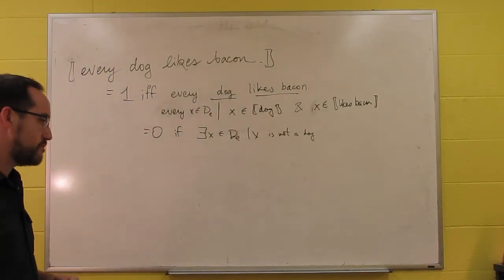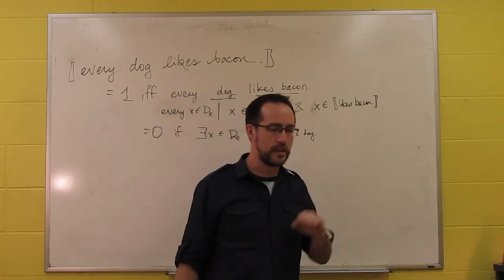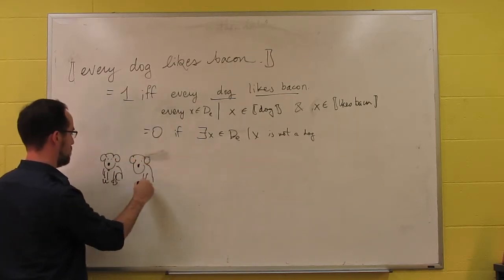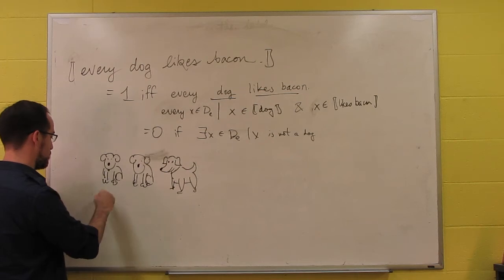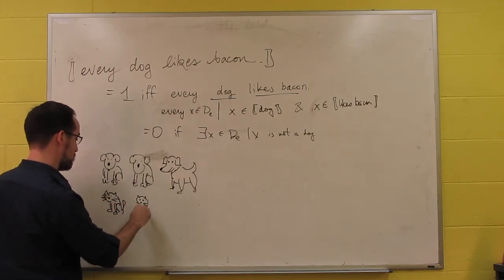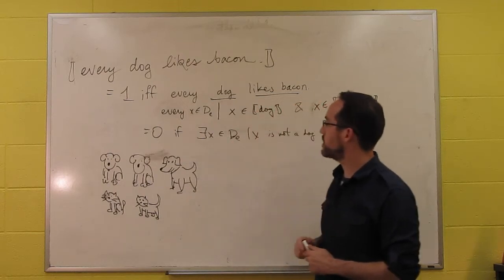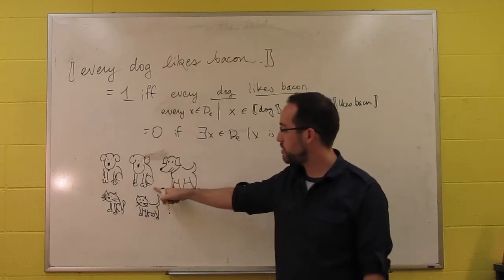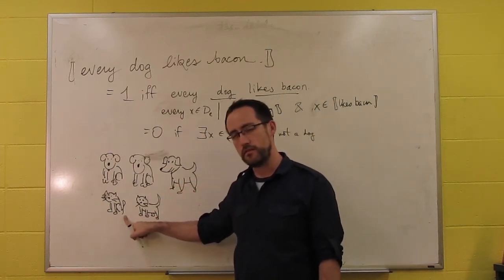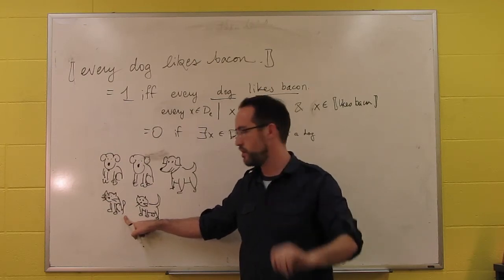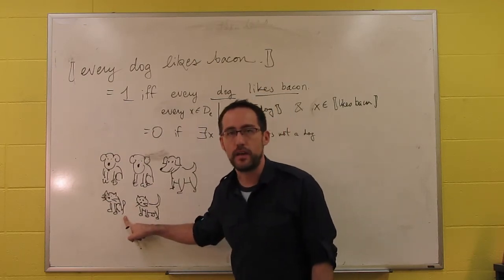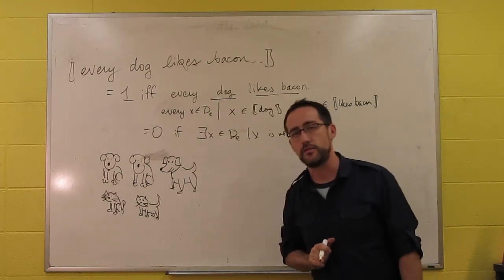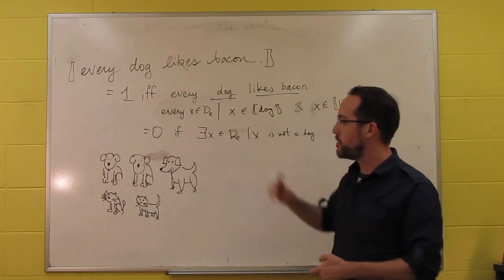How do we make sure that we're just talking about dogs? If every dog likes bacon, how do you judge that to be true? You look through all the individuals. Does this individual like bacon? Does this one? Wait, this is a cat. We don't care if it likes bacon. Whether the cat likes bacon or not is completely irrelevant to whether every dog likes bacon. So we only care about the dogs.